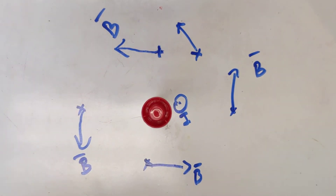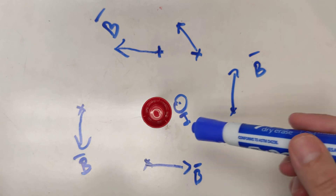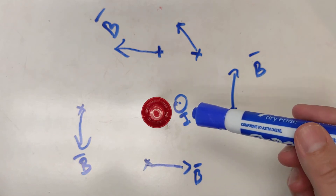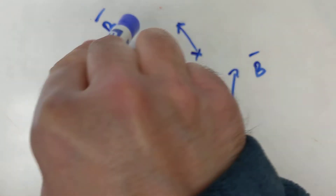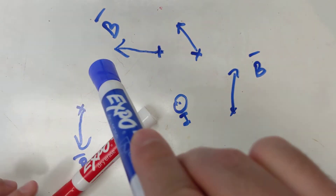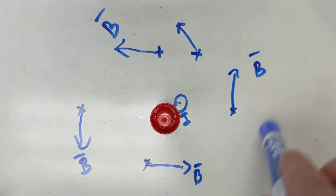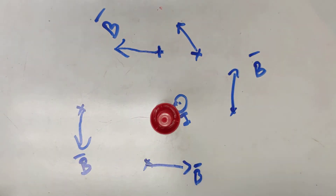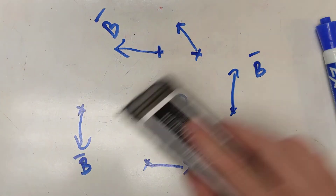I hope you can see that the pattern when you have a current flowing in a straight wire — the magnetic field is essentially wrapping around the wire.